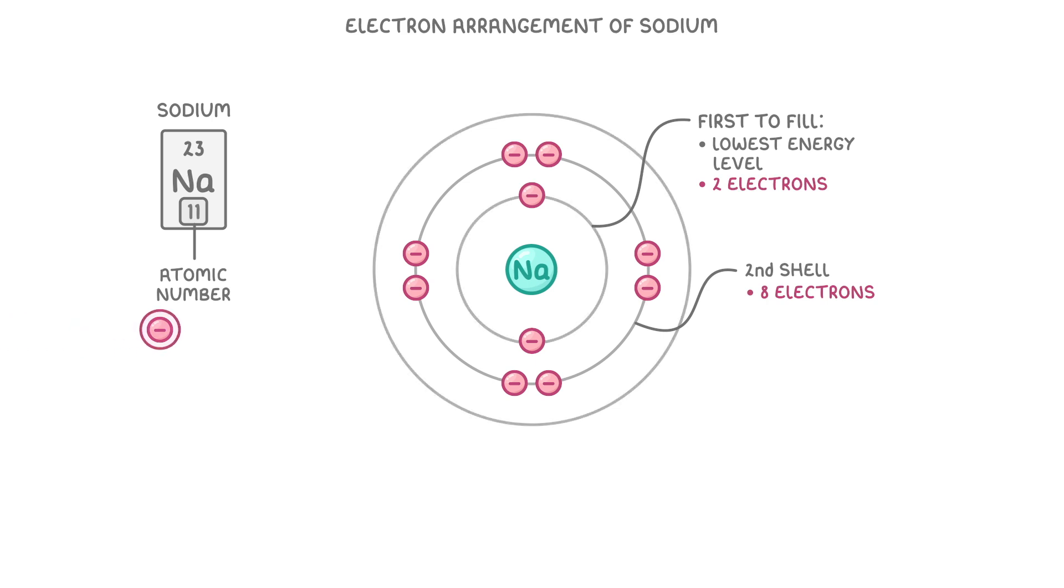As we still have one electron left, we put it in the third shell. And just like the second shell, the third one can hold a maximum of 8 electrons.